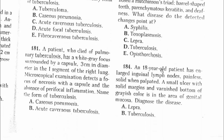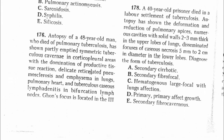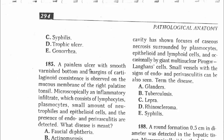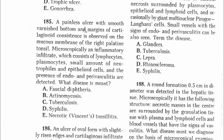Question 184: An 18-year-old patient has enlarged inguinal lymph nodes that are painless and solid when palpated. A small ulcer with solid margin and vanished bottom of grayish color is in the area of the genital mucosa. The ulcer is painless with a smooth, vanished bottom and margins. The answer is syphilis — D.